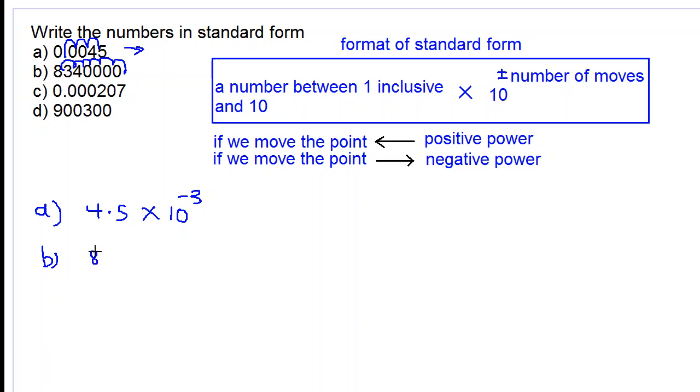So we write 8.34 multiplied by 10. We count how many numbers we had to go over: 1, 2, 3, 4, 5, 6. We went this way, this direction. And so the power is positive. So we get positive 6.